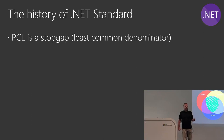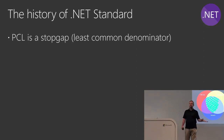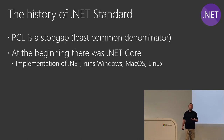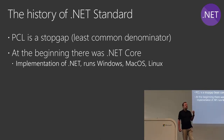Portable Class Libraries date back to 2011, so they're already pretty old. A few years ago, the .NET team decided to start from scratch and rethink compatibility. They concluded the PCL model is not great, and decided to think in a different manner — starting with a new implementation of .NET called .NET Core.